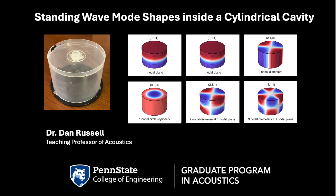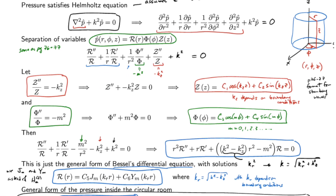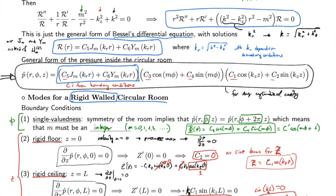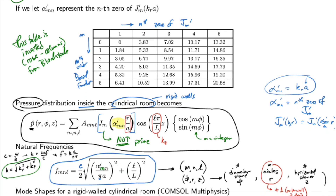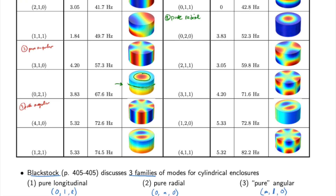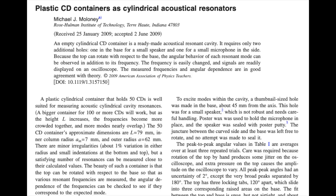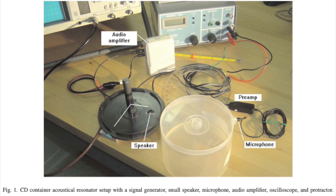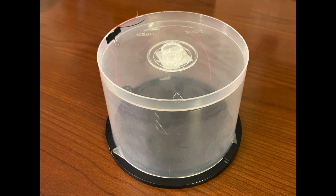In this video demonstration, I'm going to map out some of the standing wave mode shapes inside a cylindrical cavity with rigid walls. In one of the graduate level courses in theoretical acoustics that I teach at Penn State, we cover the topic of standing waves inside a cylindrical cavity with rigid floor, ceiling, and walls. While teaching this subject, I was reminded of a paper in the American Journal of Physics that investigated standing wave behavior inside a plastic compact disc container, which basically behaves as a cylindrical cavity with rigid walls.